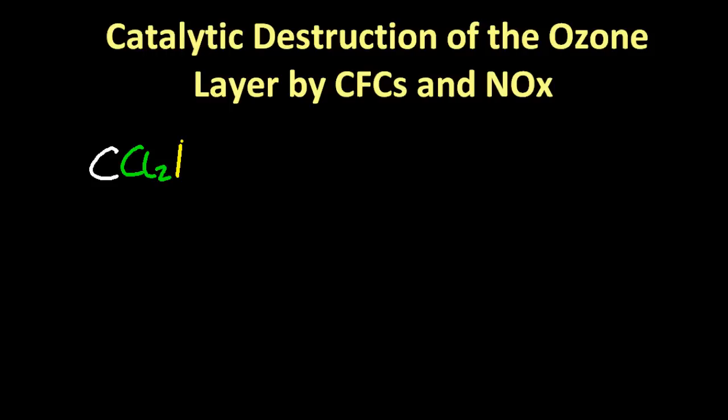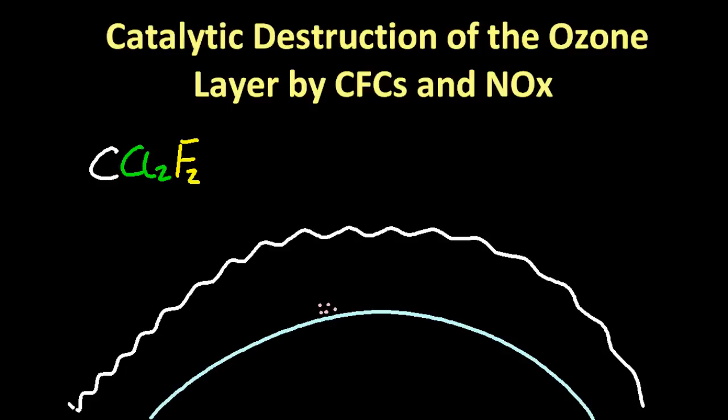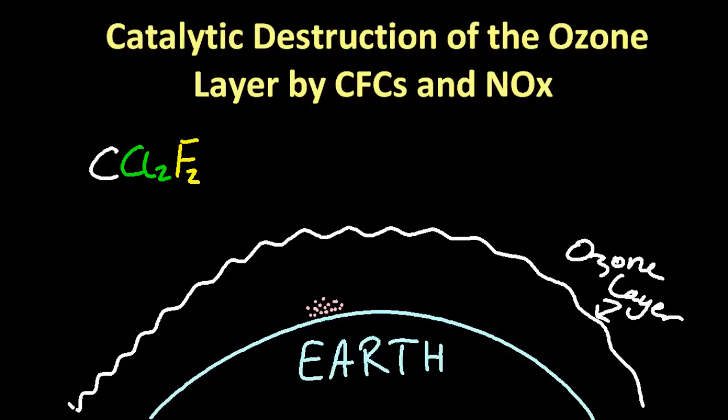So a quick refresher on dichloro-difluoromethane and why it's so bad for the environment. It's released in the troposphere where we live, but it's so unreactive it eventually makes its way up into the stratosphere where the ozone layer is, and once it's in the ozone layer it starts to destroy the ozone layer.